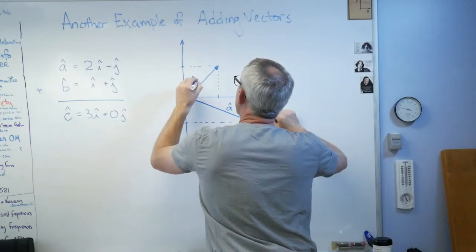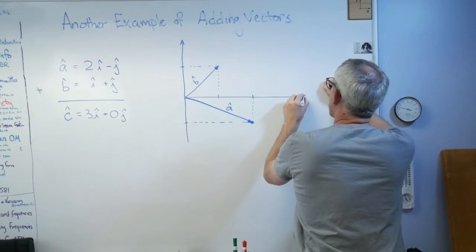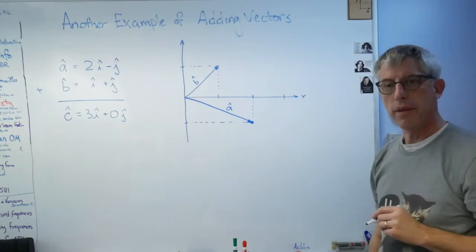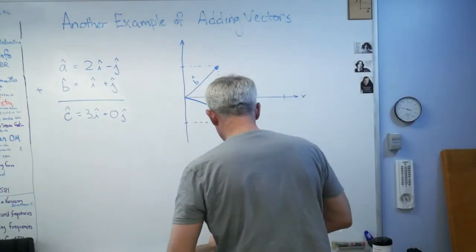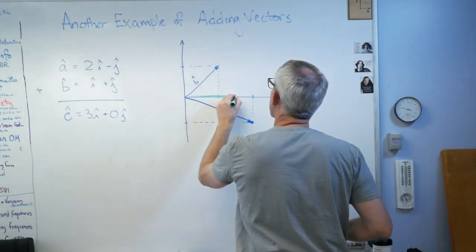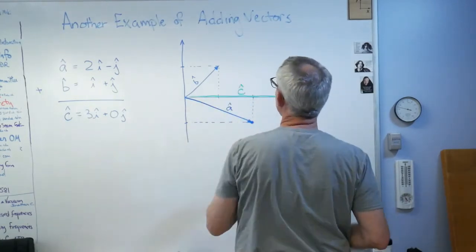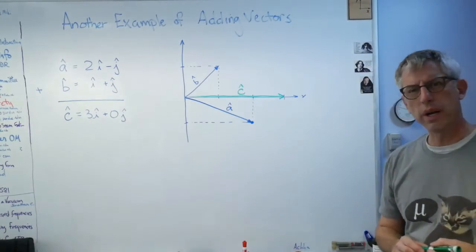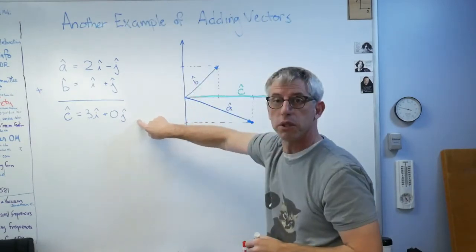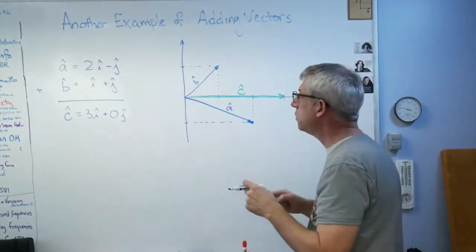And this one, that's b̂. Let me stretch this out a little bit farther. If I add those together, what I'm going to get—maybe I can even draw this in a different color, hopefully you're looking at this in a color screen—that's going to be ĉ. The other way I can do this is I can do the nose-to-tail approach. There's the nose of one vector, there's the tail of the other one.